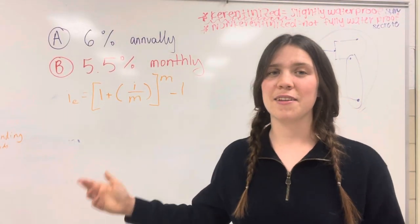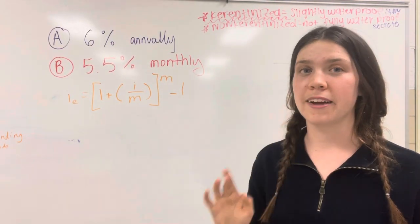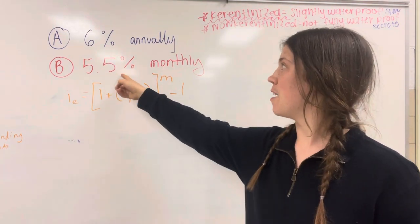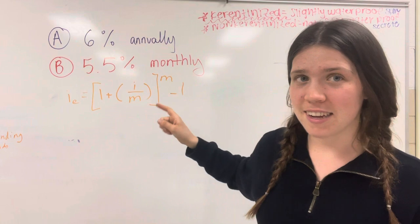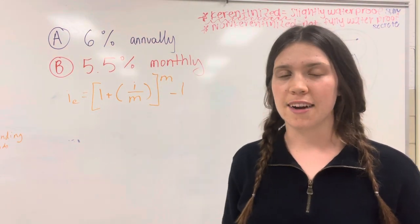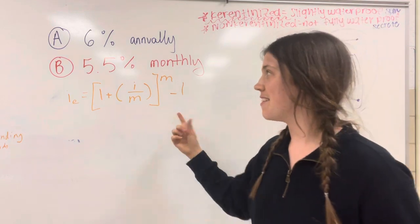This is how to compare different investments with different compounding periods per year. At first glance, you might think 5.5% monthly is a much better deal than 6% annually if we're only investing for one year, just hypothetically. But let's see if that's really true.